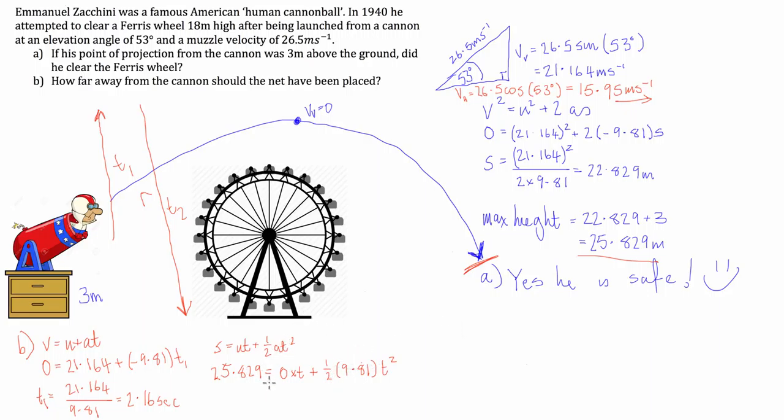We'll rearrange this. That term will go to zero, and we'll get t2 equal to the square root of 25.829 divided by ½ times 9.81. And that equals 2.295 seconds.